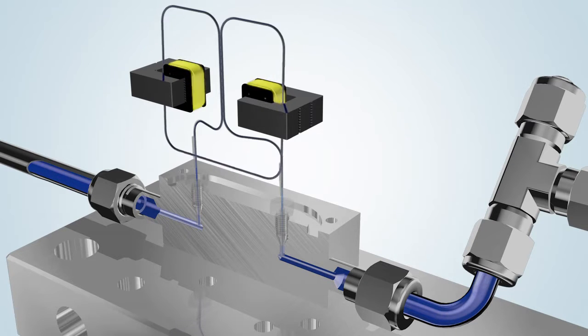All Coriolis instruments are equipped with a sensor tube, which can be used to measure both gases and liquids extremely accurately.